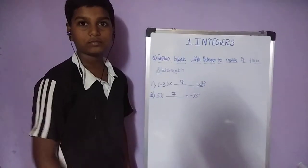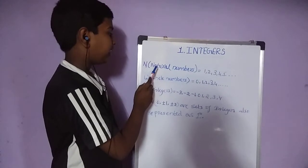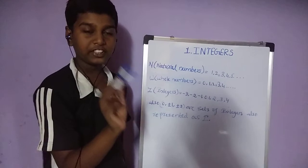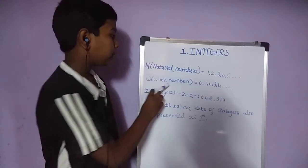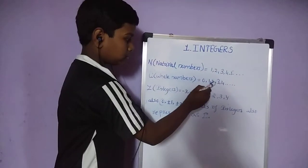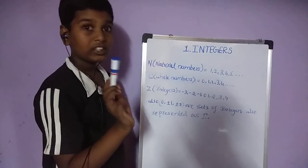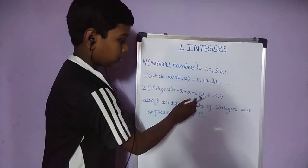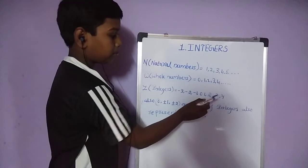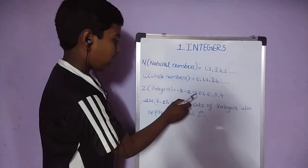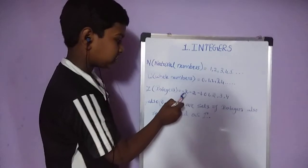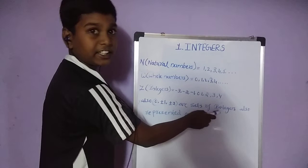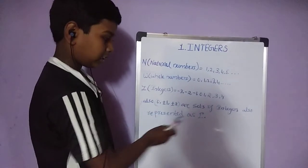What are natural numbers? Natural numbers, denoted by N, start with 1: 1, 2, 3, 4, 5. What are whole numbers? Whole numbers start with 0: 0, 1, 2, 3, 4. Integers include positive integers and negative integers such as minus 1, minus 2, minus 3. The set of integers is also represented as I.